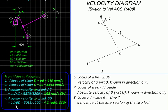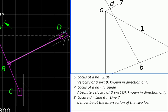That will give us the angular velocity of link BD. The same need to be repeated for link AC as well.